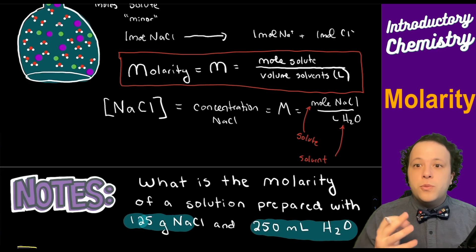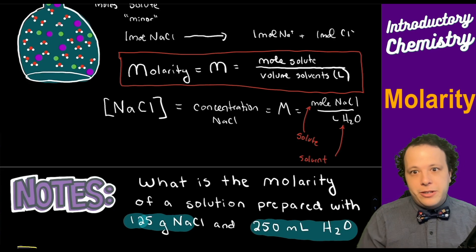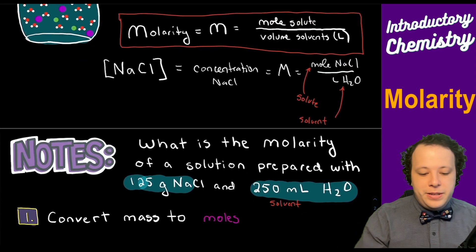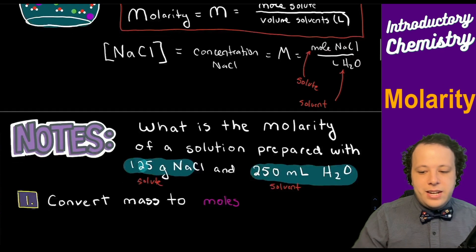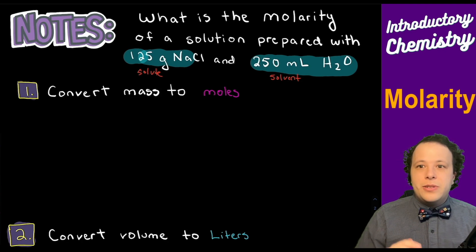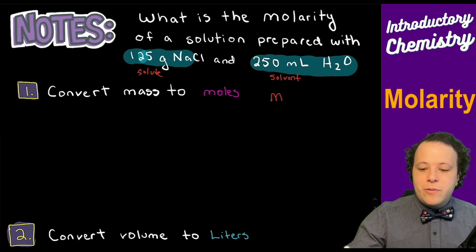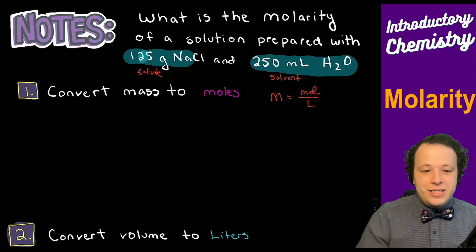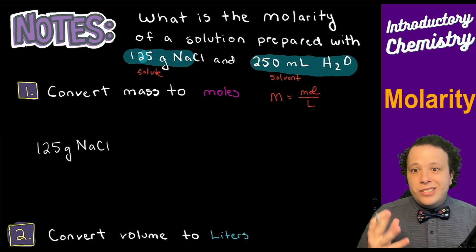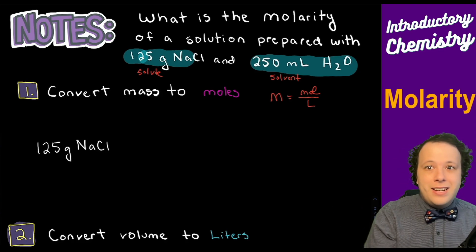In 99% of your situations, water is most likely going to be your solvent in general chemistry. So the first step is to convert mass to moles, being that molarity is moles over liters. Taking 125 grams of NaCl, we're going to do a dimensional analysis conversion, setting it up like a T-table.